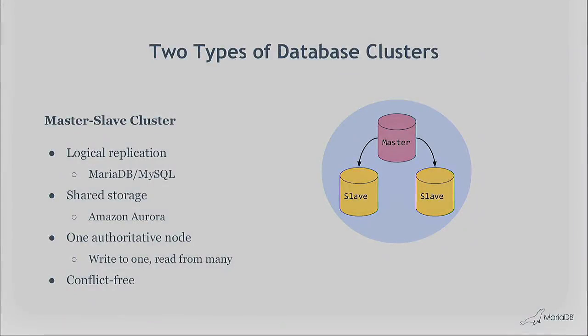I split database clusters into two types. First, the master-slave cluster: one master server tells the slaves what to do. In MariaDB and MySQL, modifications on the master are replicated to the slaves. Amazon Aurora does this via the storage layer — writes go to shared storage. There's one authoritative node: you write to one place but can read from all places. This is conflict-free by design, though conflicts can still happen in practice.